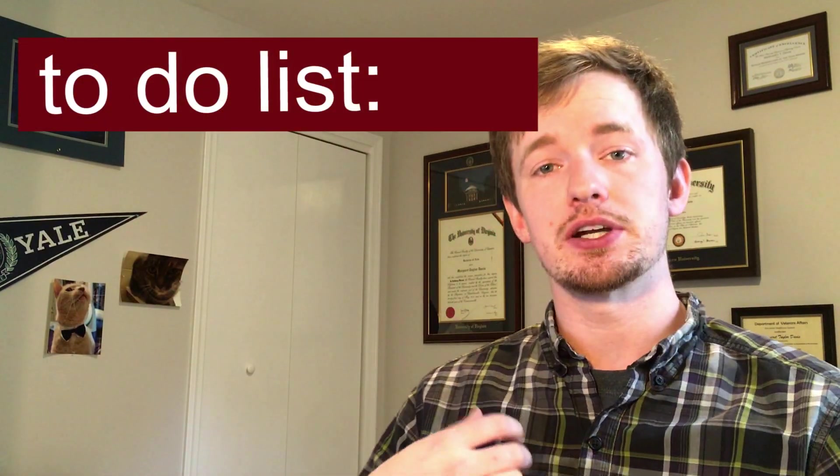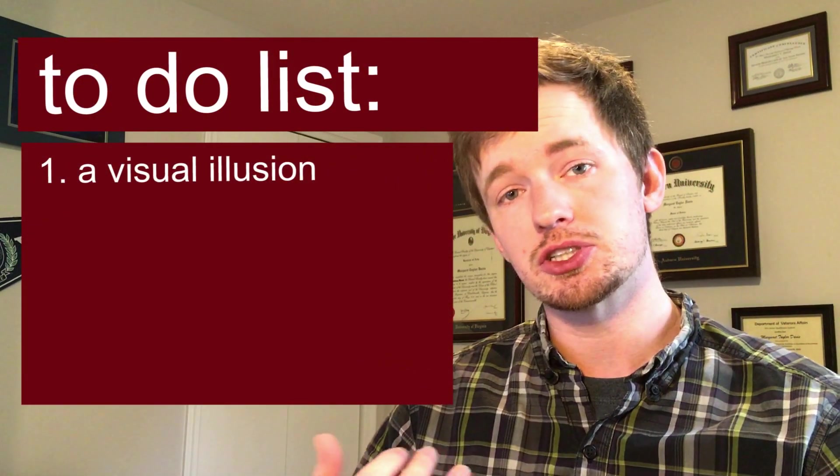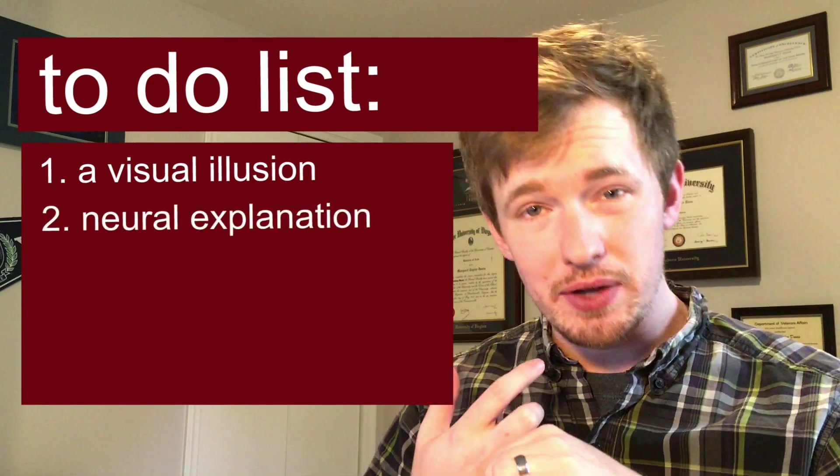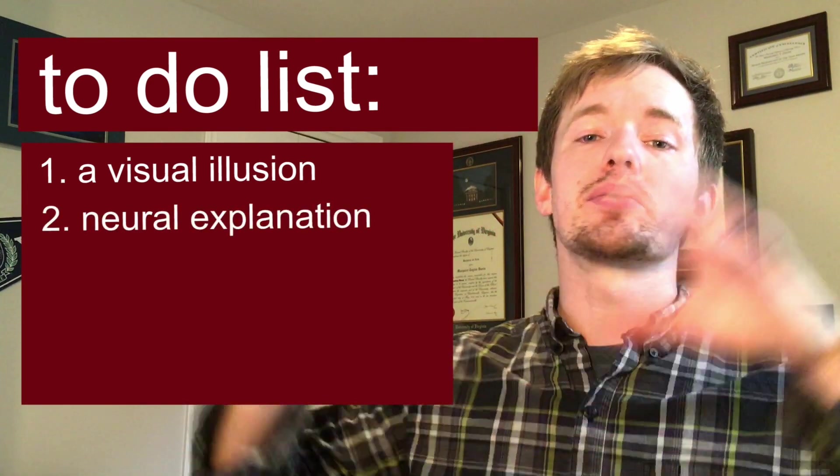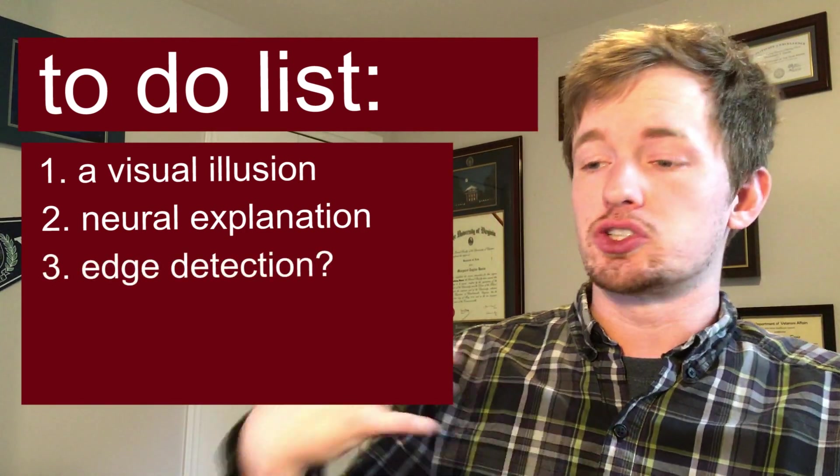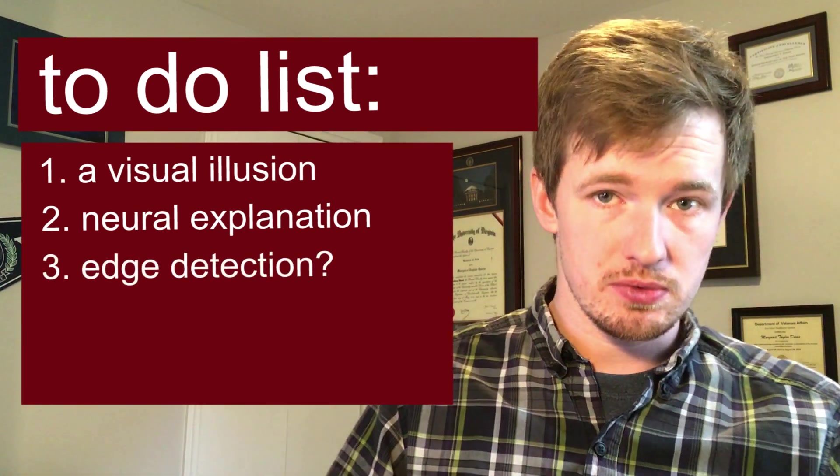Edge detection comes to us through lateral inhibition which takes place in the eye. What I want to do in this video is show you an example of lateral inhibition at work in a visual illusion, talk about the neural explanation for why this happens, and then pull back and look at the broader picture for how this translates into edge detection in our visual world.